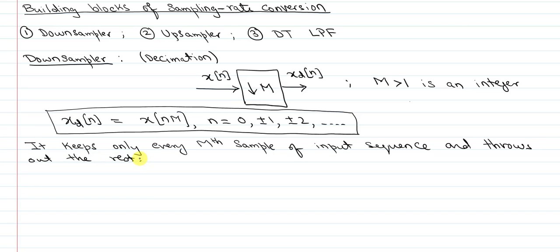Effectively, it keeps a sample, throws out m minus 1 more samples, keeps the next sample, throws out m minus 1 samples, and so forth. So let's take a very particular example of that for a length.